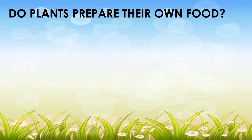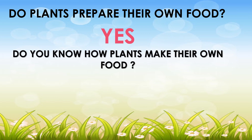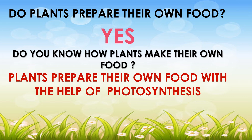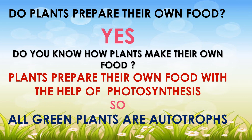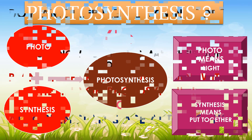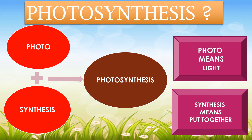Do plants prepare their own food? Yes, plants prepare their own food. Plants prepare their own food with the help of photosynthesis, so all green plants are autotrophs. Photosynthesis: photo plus synthesis — photo means light, synthesis means put together.